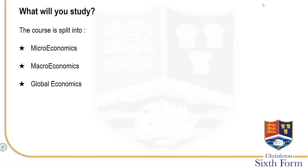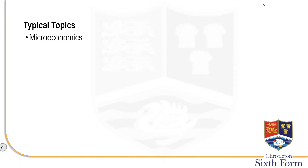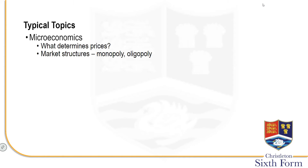So the course which we will be doing is split into three clear sections: microeconomics, macroeconomics, and then macro also has some global economics as well. Typical topics are things like what determines prices, market structure — so we will look at things like monopoly, oligopoly — we will look at the market, the labour market and thinking about the employees that work there and what impact this has.